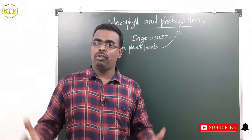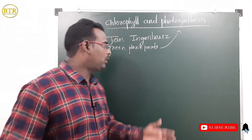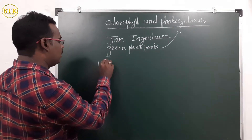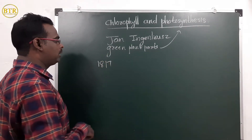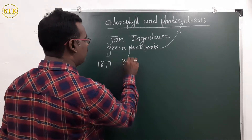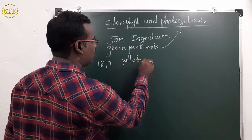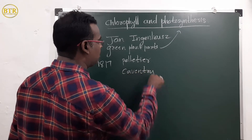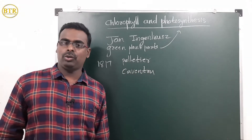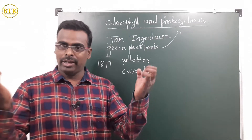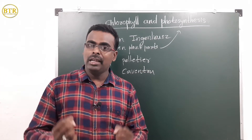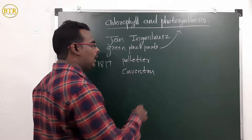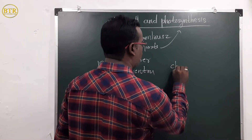Four decades after John Ingenhouse's experiments, in 1817, Pelletier and Caventou extracted the green colored substance from the leaves and named that green colored substance as chlorophyll.